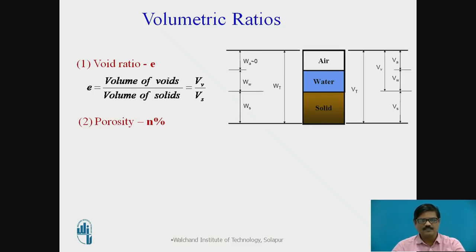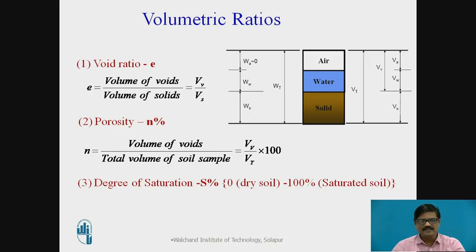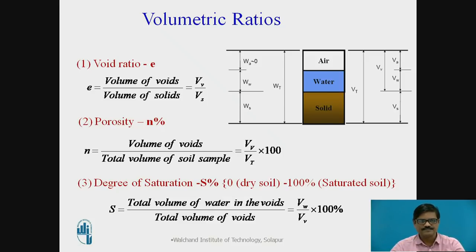The second property is porosity, usually expressed by small n as a percentage, given by volume of voids divided by total volume of soil sample — mathematically Vv upon Vt into 100. The third property is degree of saturation, represented by the symbol S. It is the ratio of total volume of water in the voids divided by total volume of voids — mathematically Vw divided by Vv into 100. We can refer all these equations with respect to this three-phase system to define the various parameters.